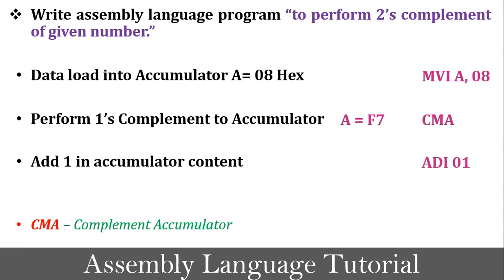The instruction for adding 1 is ADI 01. Using ADI, the value 01 is added into the accumulator. After execution of ADI, the accumulator content becomes F8. We are now getting the 2's complement of 08, so our program is complete. Let's check the step-by-step execution of this program in GNUSim 8085.